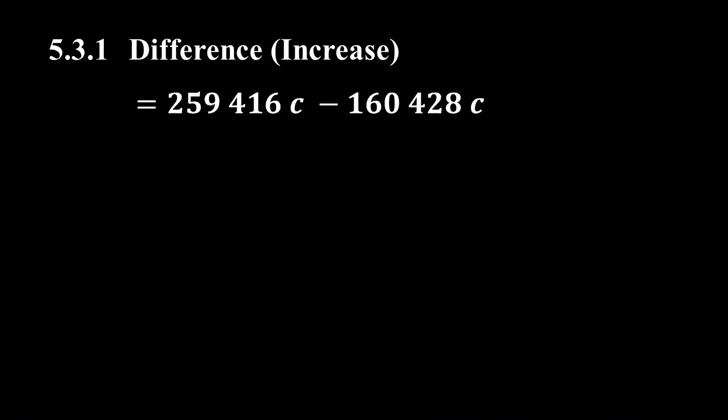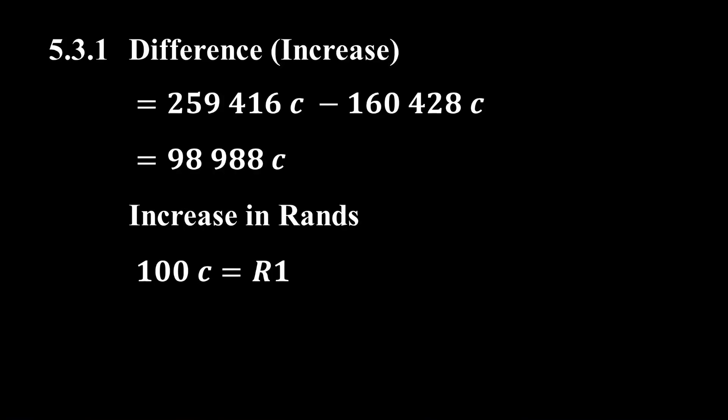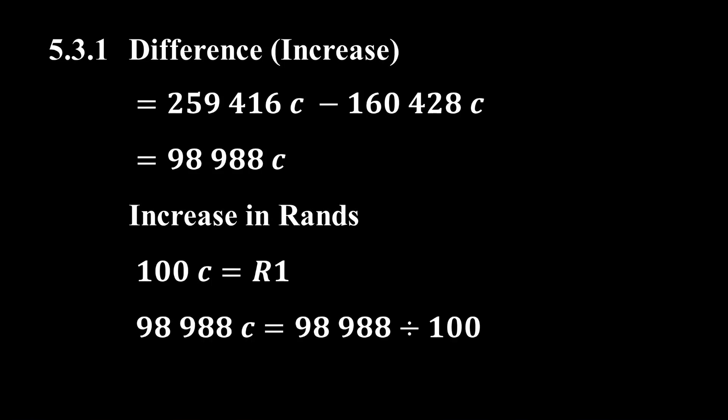Finding the difference between these two costs gives us a difference of 98,988 cents. We are not done yet — we still have to convert this cost to rands. Since there are 100 cents in one rand, 98,988 cents divided by 100 equals R989.88.